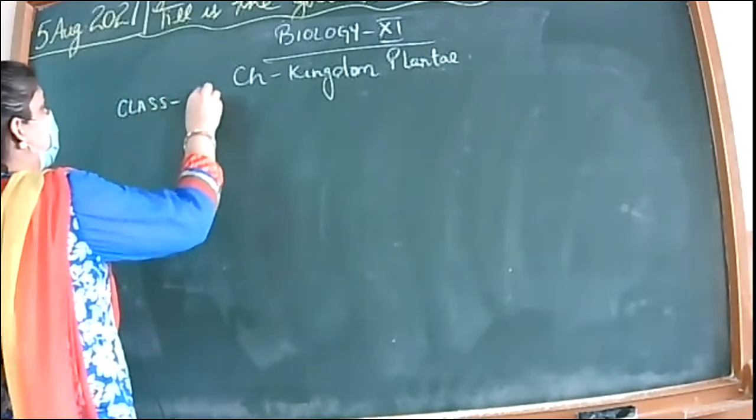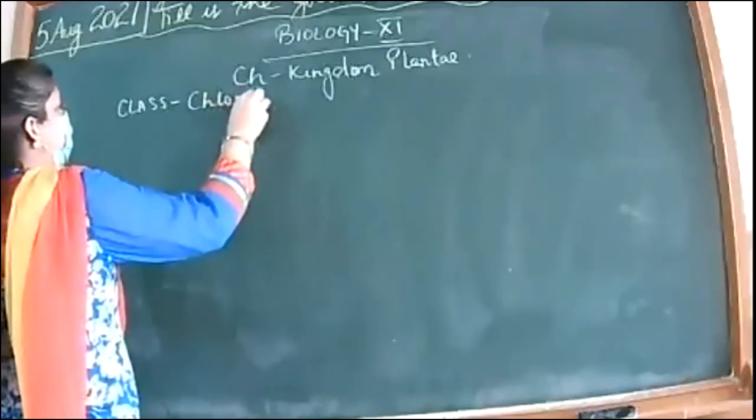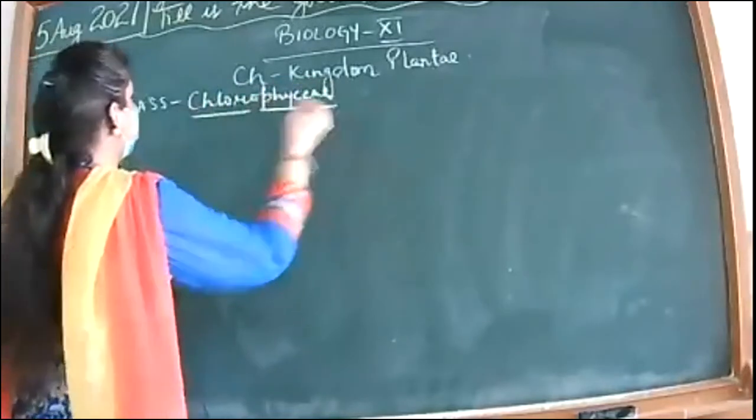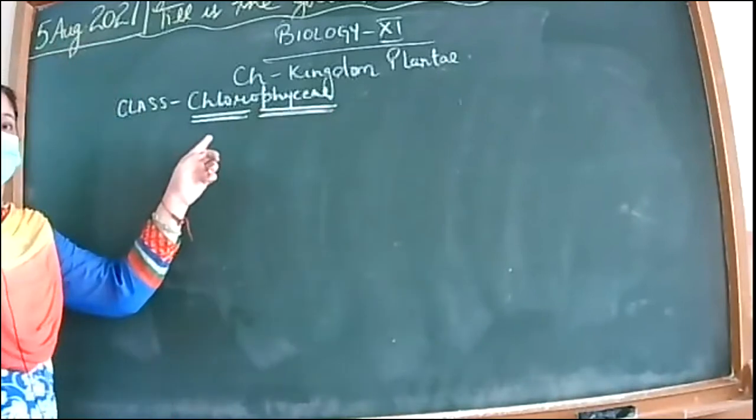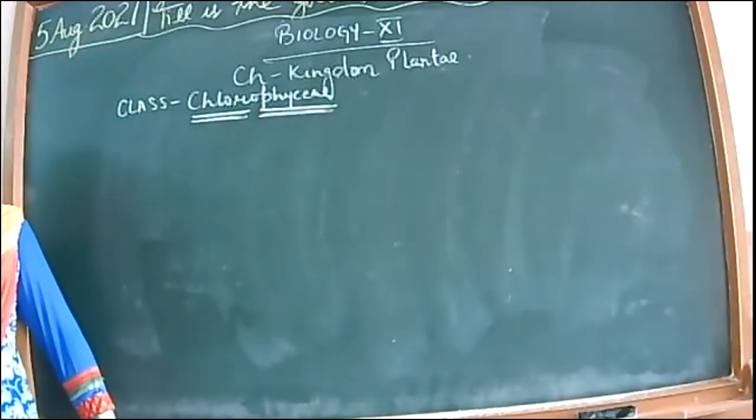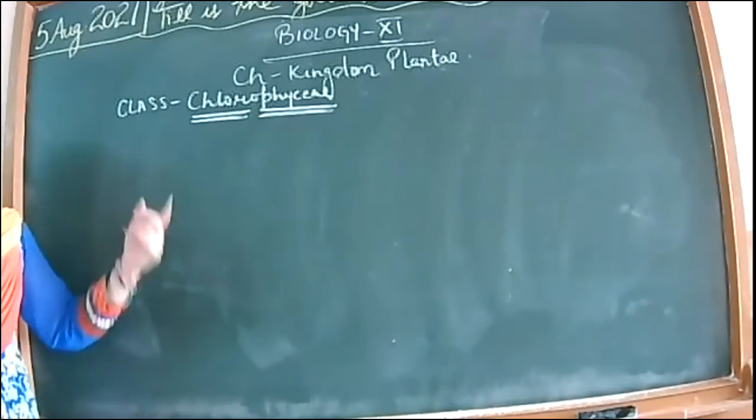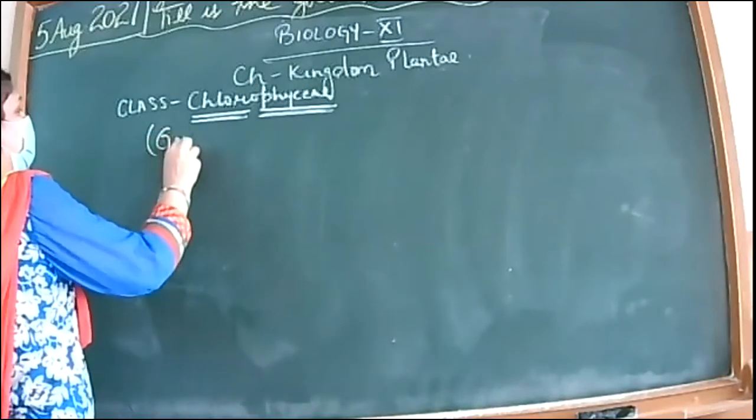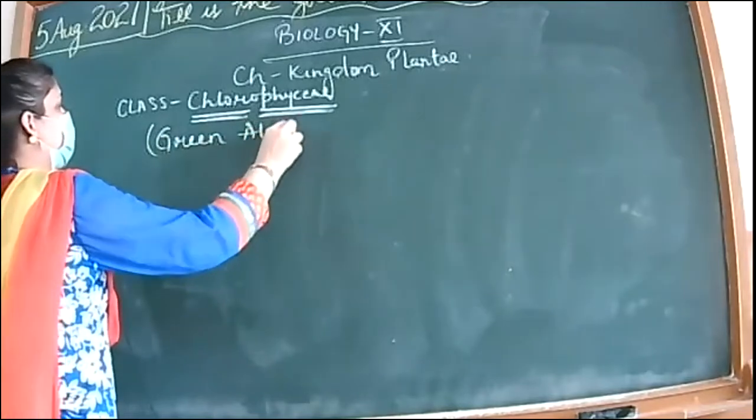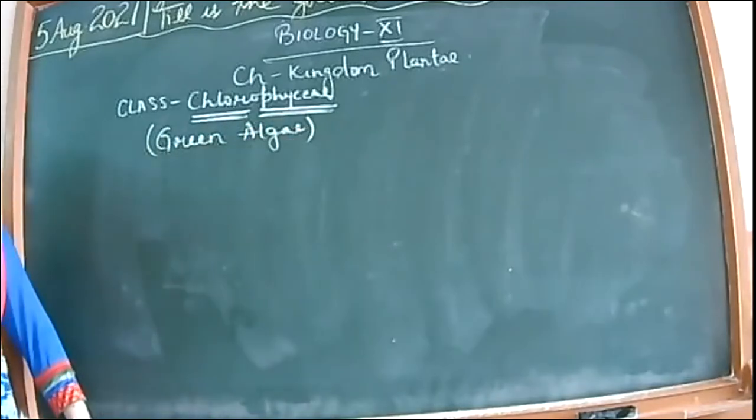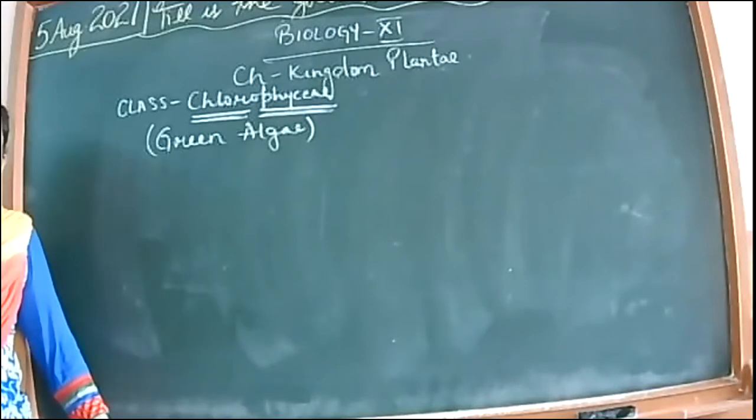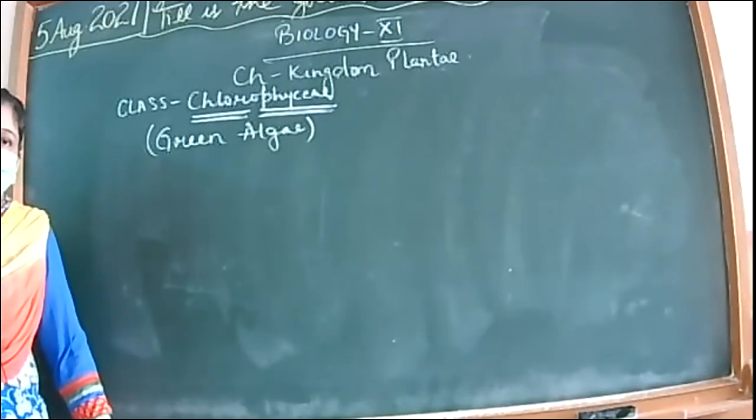The first is class Chlorophyceae. As the name suggests, this has chlorophyll in it. The term 'chloro' comes from chlorophyll. Having the presence of chlorophyll, these are green in color, so they are called green algae. These are all green members of the Thallophyta.